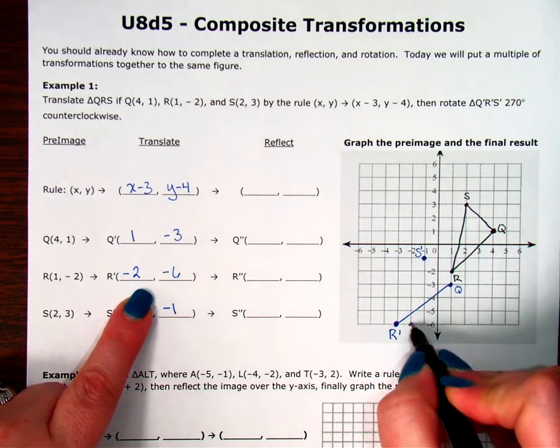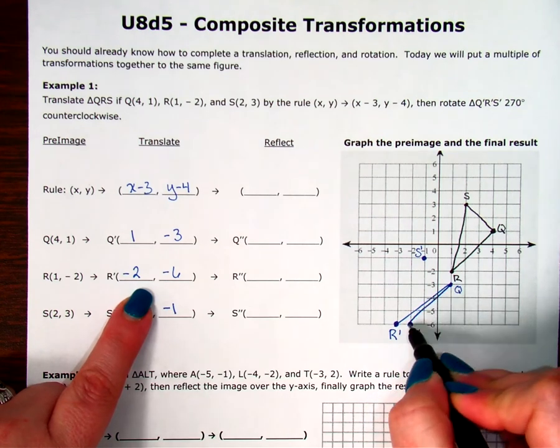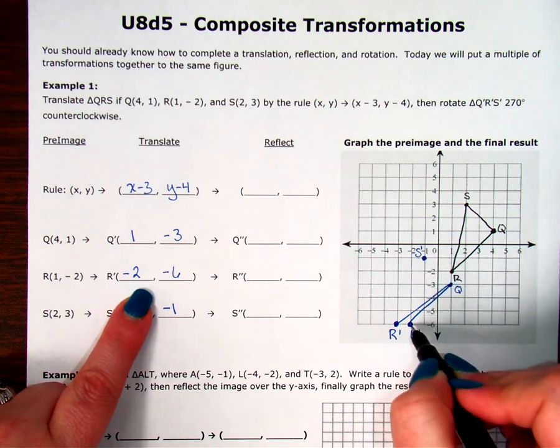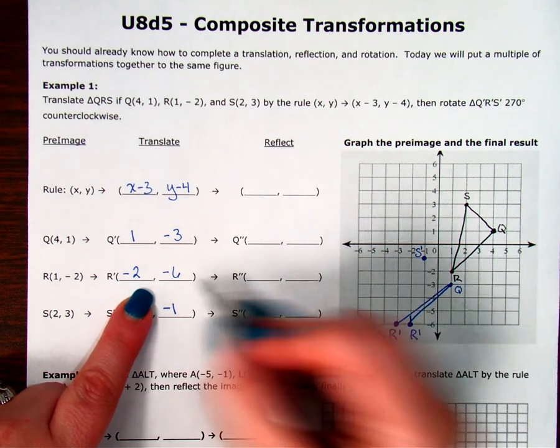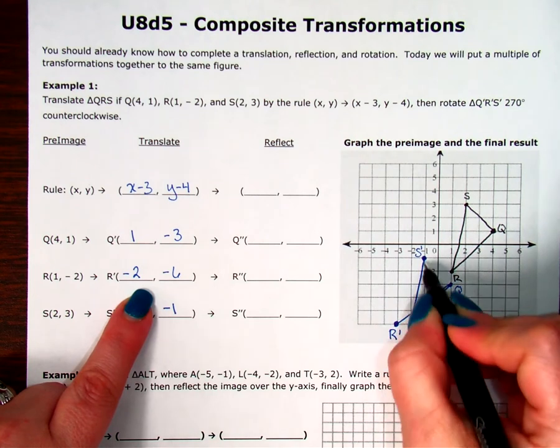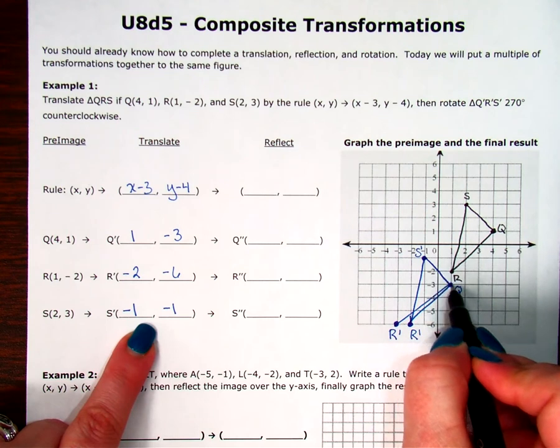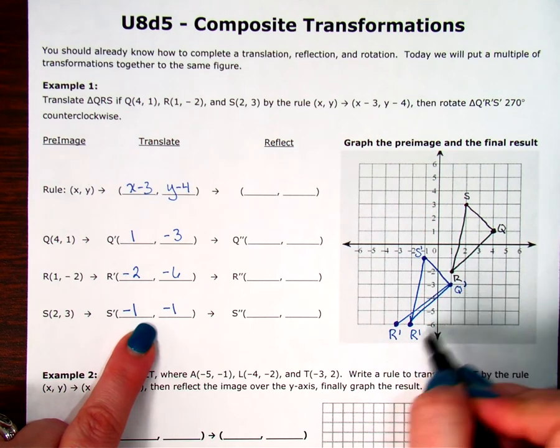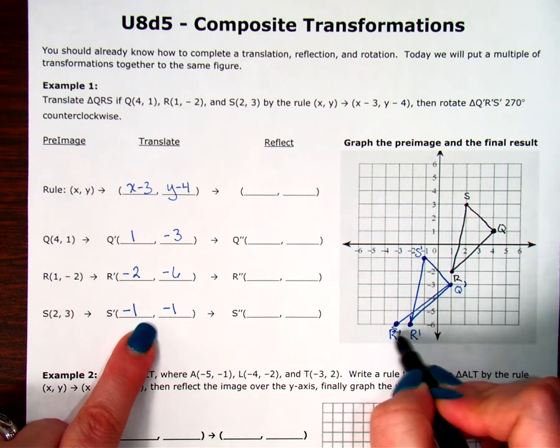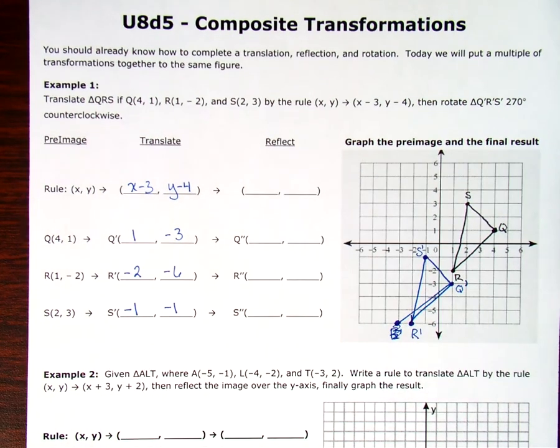And, we can check. Q was at (1, -3). R was at (-2, -6). Oh, hold on. Did I go back too far? Oops, I did go back too far. R prime. I counted wrong. R prime brings me here. Negative 2, negative 6. That's why it's good to do the math part, right? And, not just look at your eyes. And, then, S is at (-1, -1). So, here is my Q prime, R prime, S prime. Ignore this part here. That's not correct.